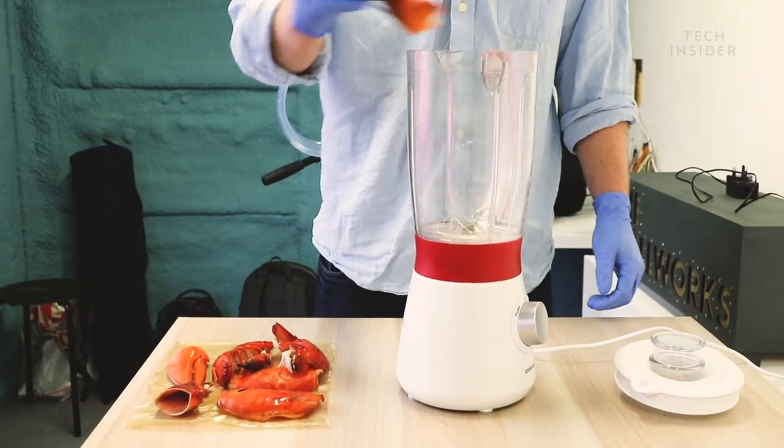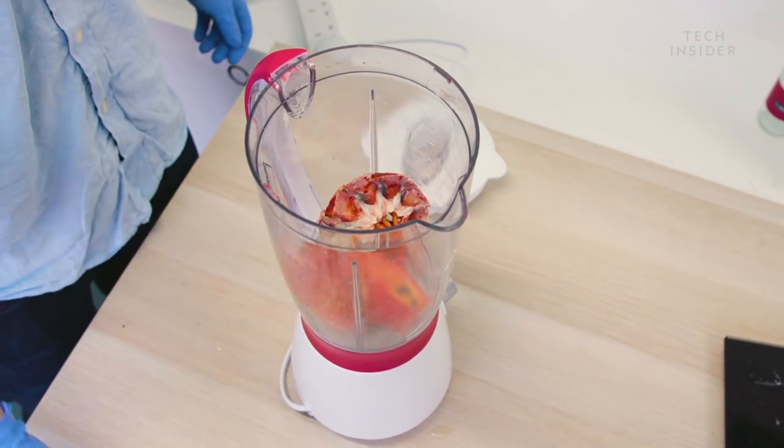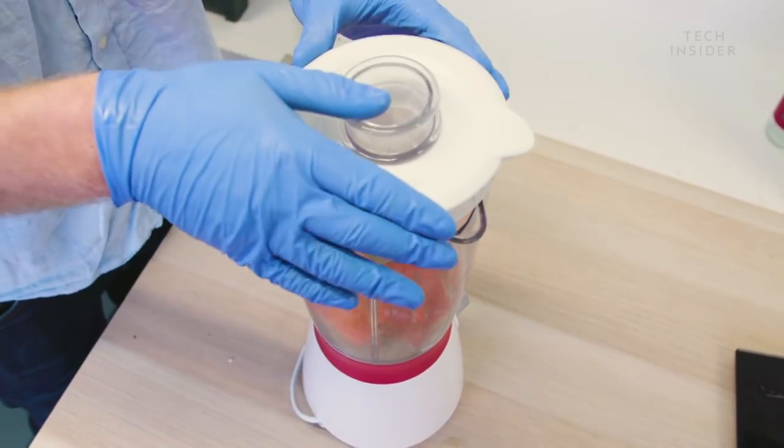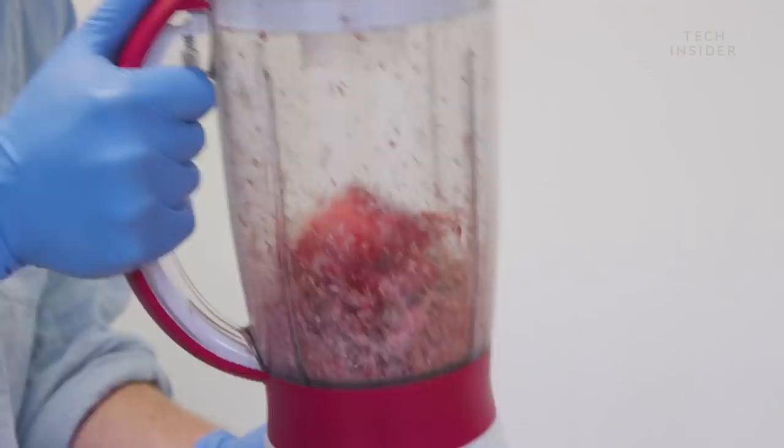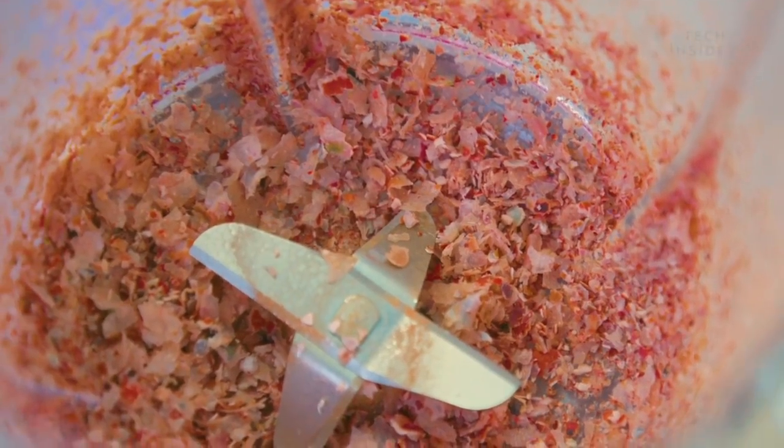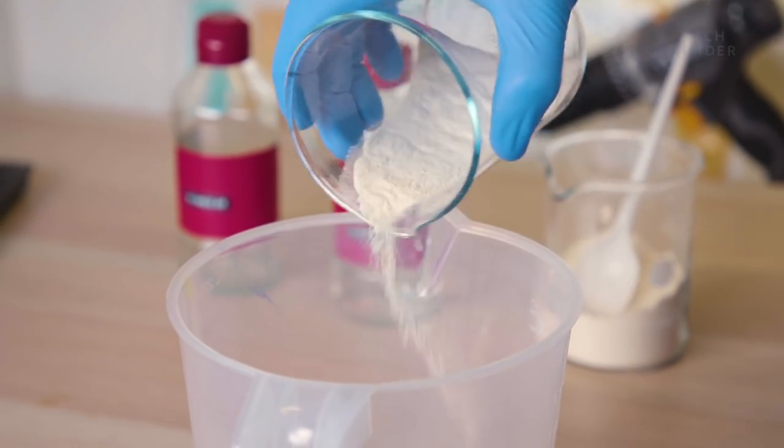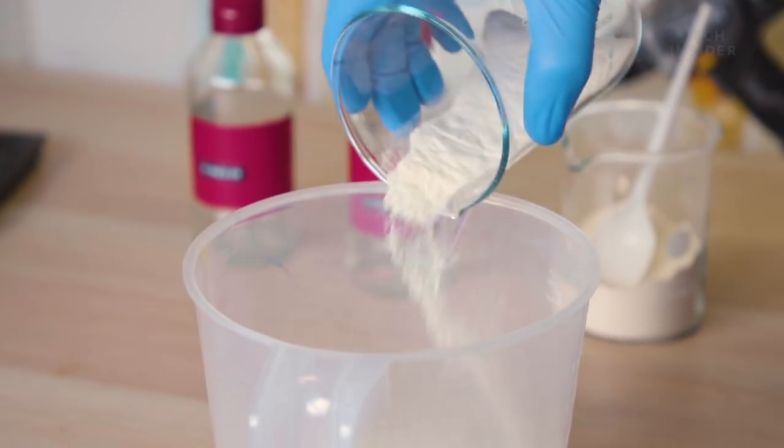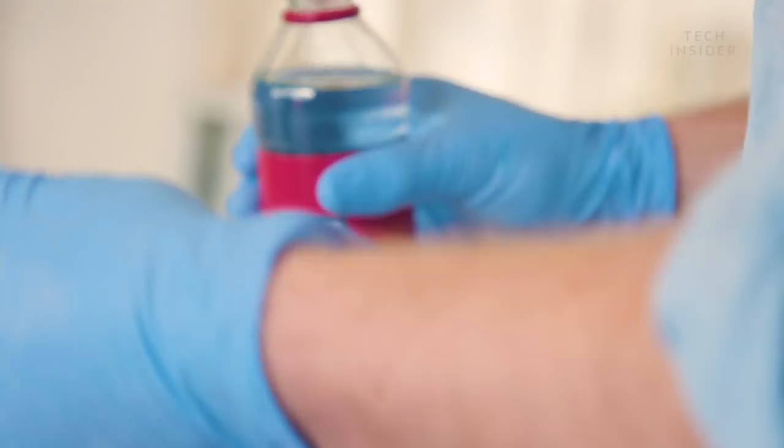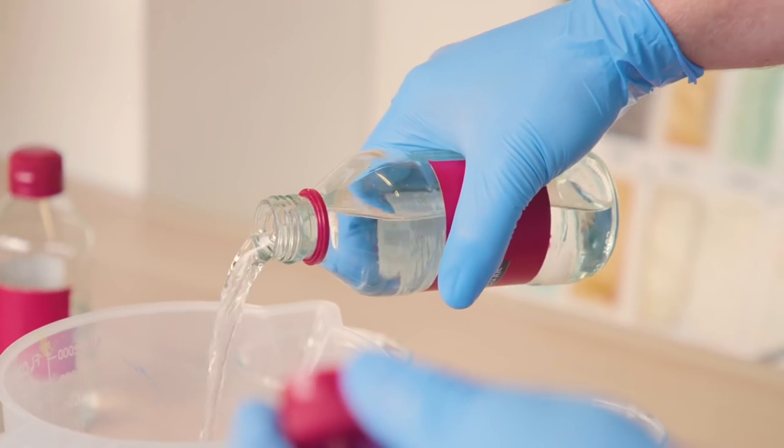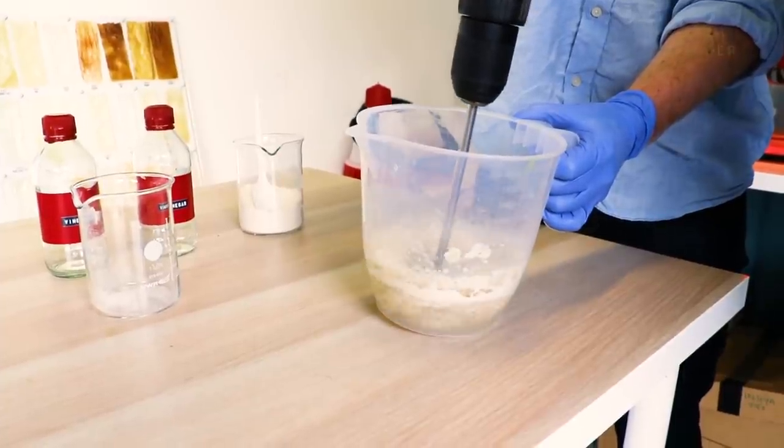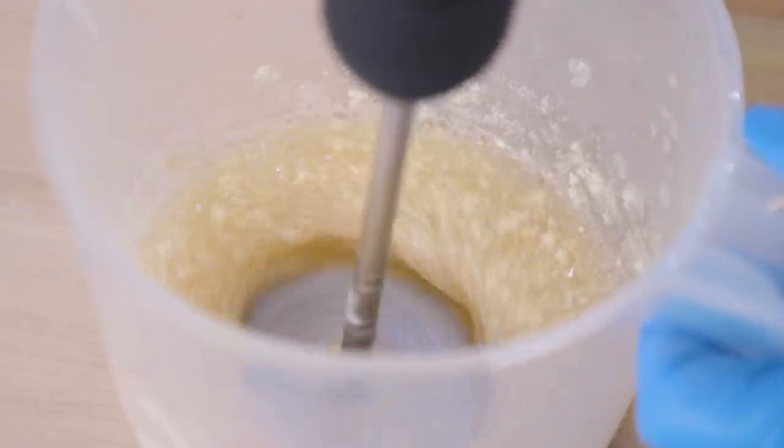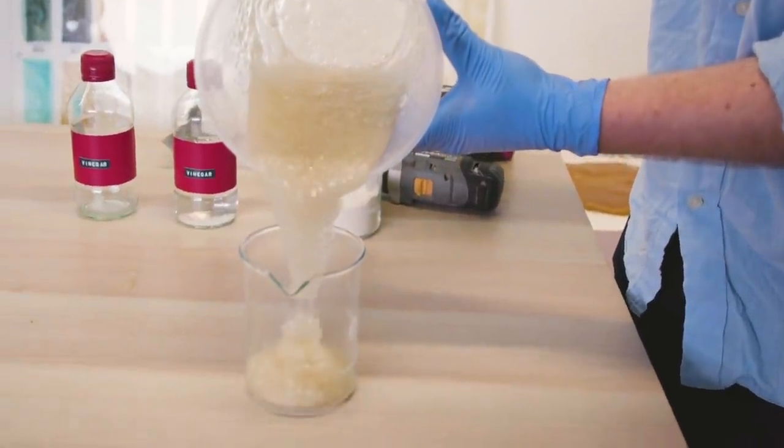We start with the shells, extract the chitosan powder, and then add vinegar in varying ratios. That forms a chitosan bioplastic goop, which we put into the dip form machine.